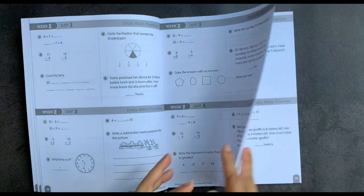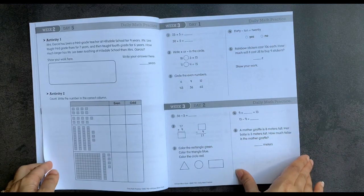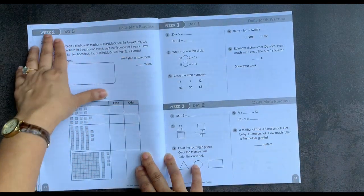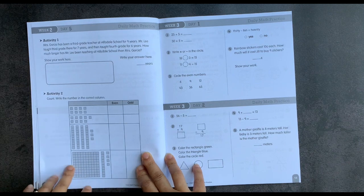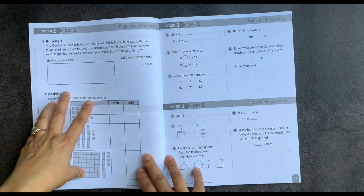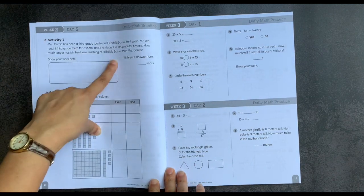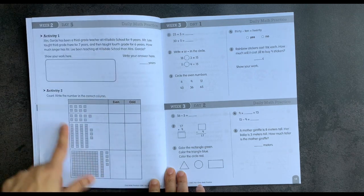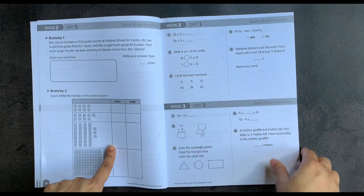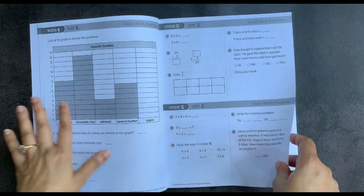With a simple little daily math practice. So I'm going to go through here. You'll notice that day five has activities, so it's slightly more open-ended where you have a word problem and an area to show your work. And here you have a different type of problem than the other four days.